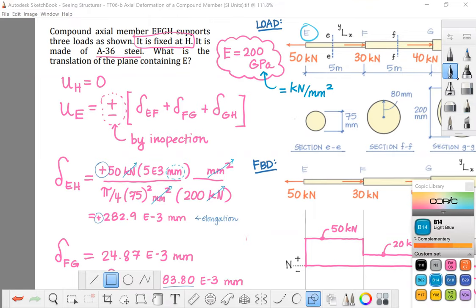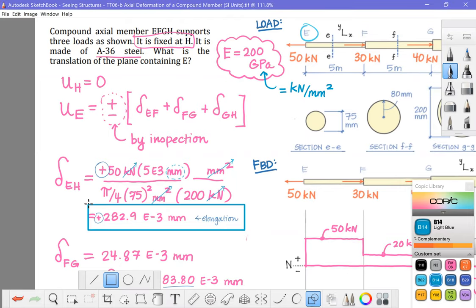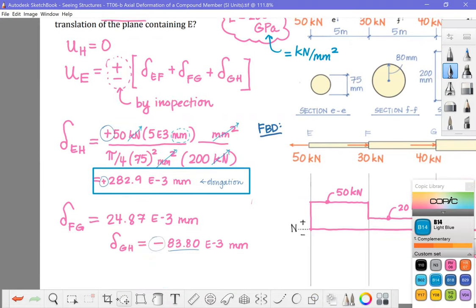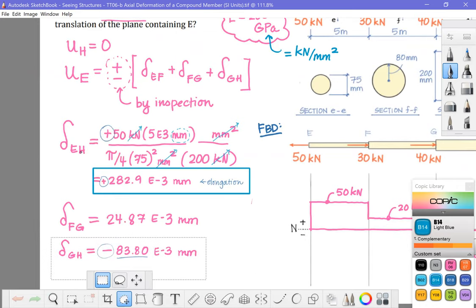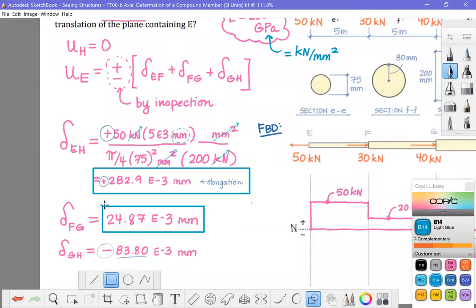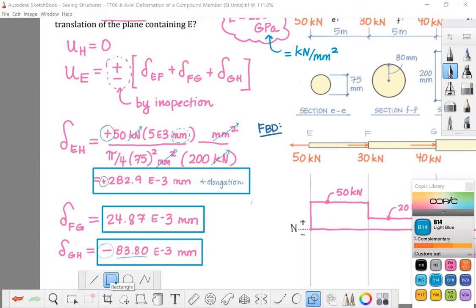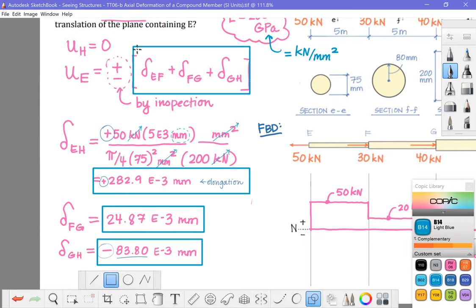So to finish this problem, all we have to do is sum up the change in length between E and H. That one back there. The change in length between F and G and the change in lengths between G and H. Okay.